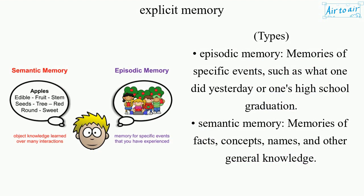There are two types of explicit memory. Episodic memory refers to memories of specific events, such as what one did yesterday or one's high school graduation. Semantic memory refers to memories of facts, concepts, names, and other general knowledge.